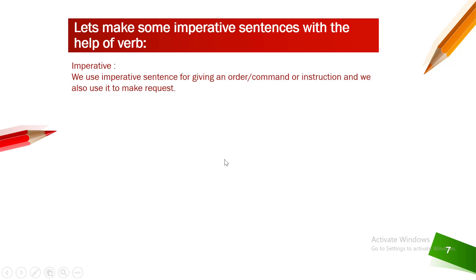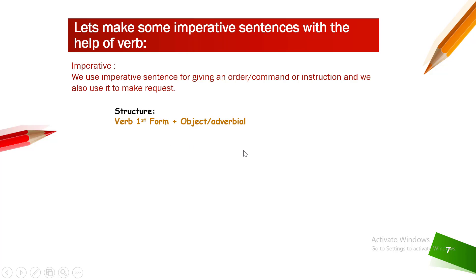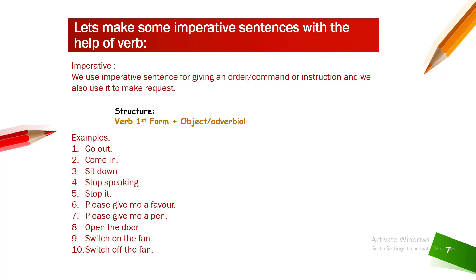Let's make some imperative sentences with the help of verb. Before making imperative sentences, we should know what imperative is. We use imperative sentences for giving an order, a command, or an instruction, and we also use it to make a request. The structure of an imperative sentence is: Verb first form + Object / Adverbial.